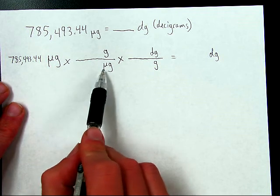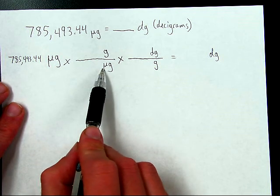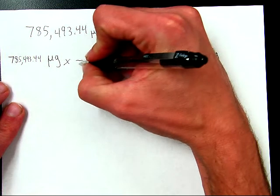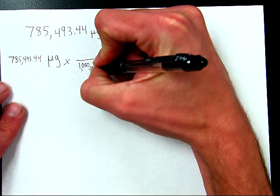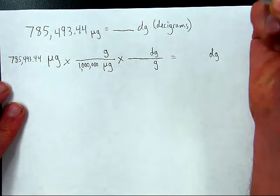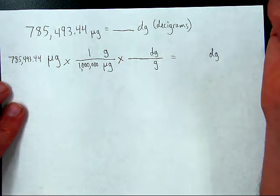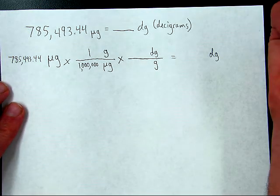And this is the small unit. Micro is really small. So a microgram is a really small unit. So I'm going to put the big number, one million, next to microgram, the small unit. And then I'll just put a one up here. So one gram is a million micrograms.